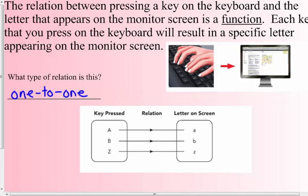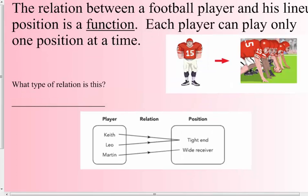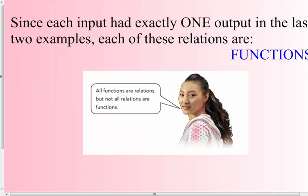The relation between a football player and his lineup position is a function. Each player can only play one position at one time. What type of relation is this? Many to one — which is a function. Since each input had exactly one output in both examples, each of these relations are functions.